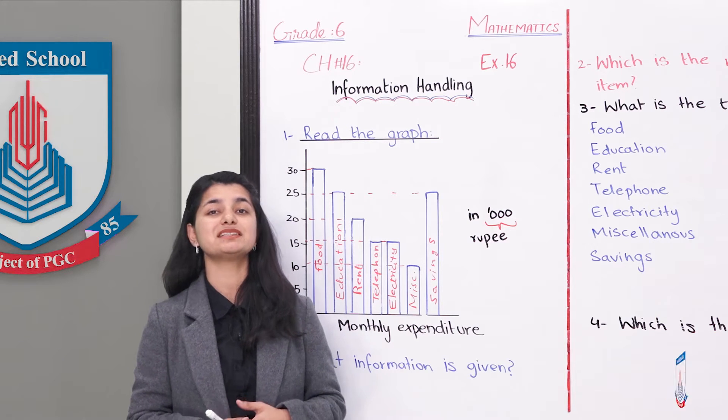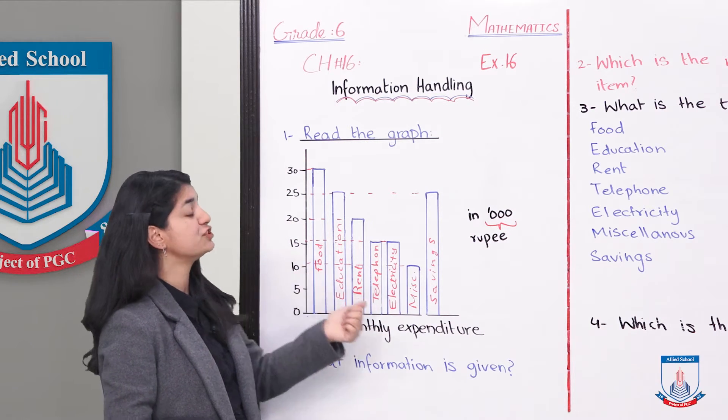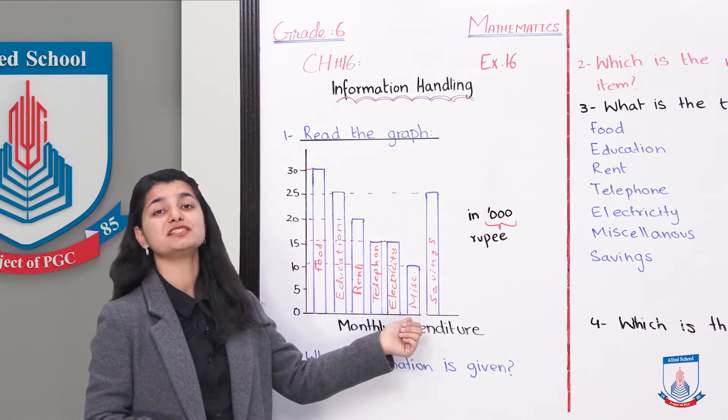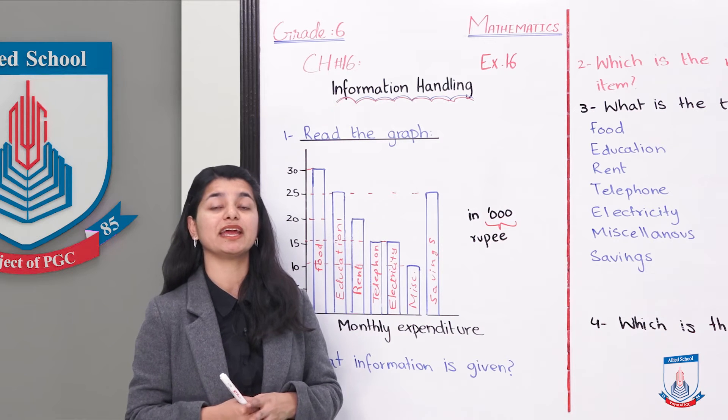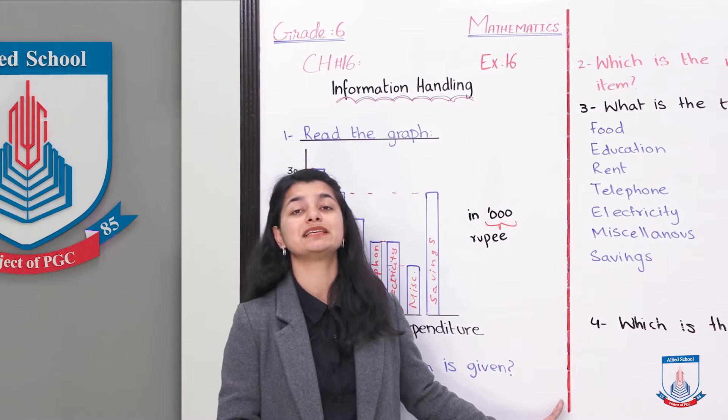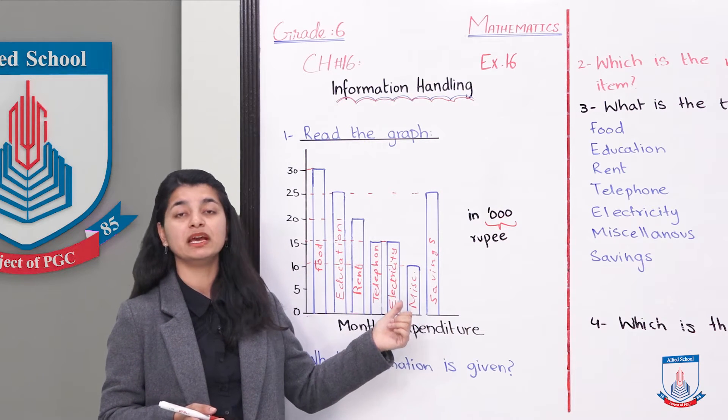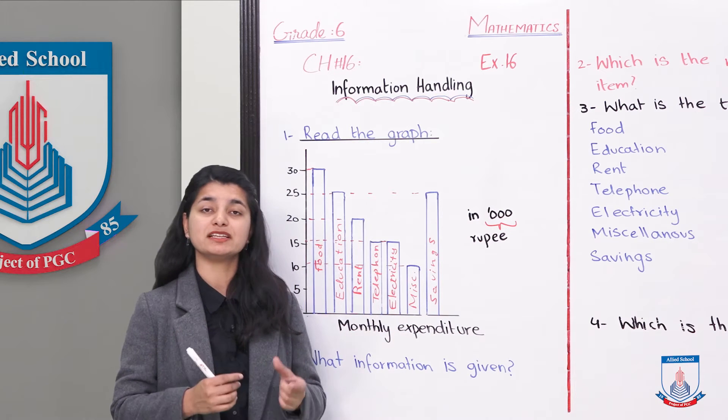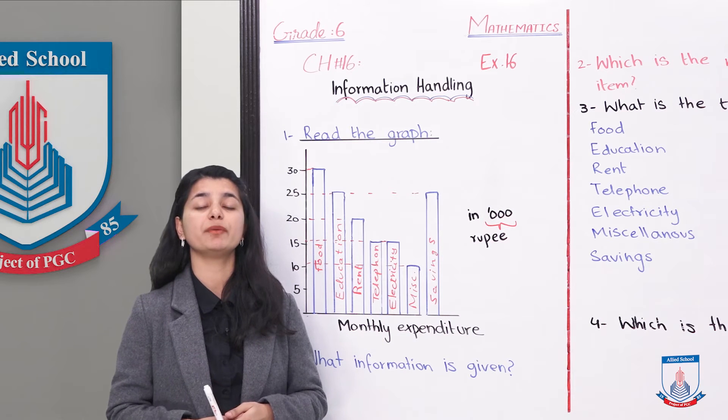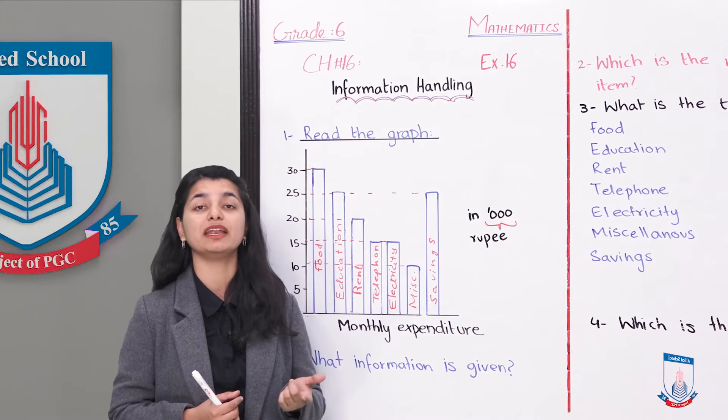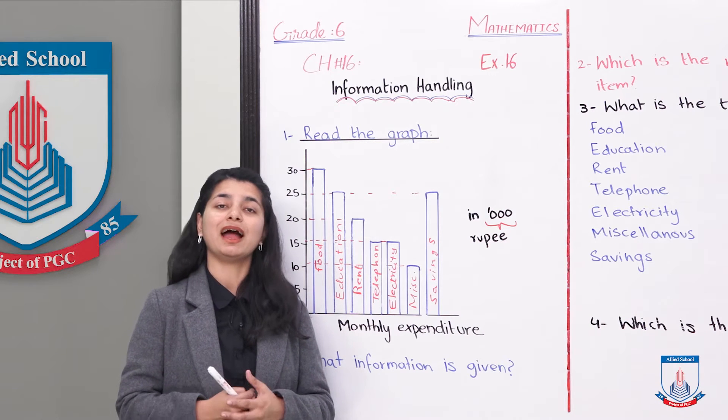First, we have seen the cost which is the most expensive, which is the most above amount, that is 30,000 for food. The cheapest expenditure, which is the least, is miscellaneous expenses at 10,000 only. Now we have questions to answer them. First question: what information is given in this graph? In this graph, you are telling a family monthly expenditure, which is a specific family, and how much money is expressed with the help of a graph.